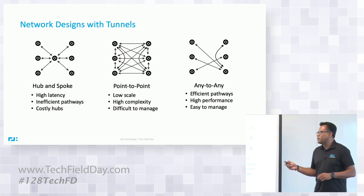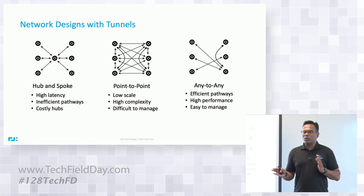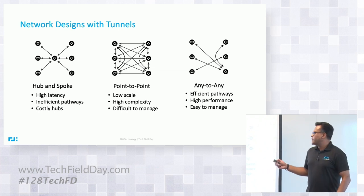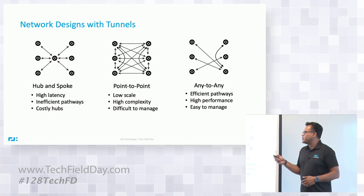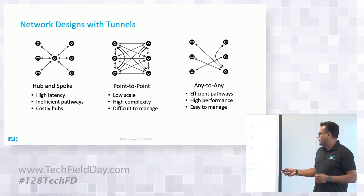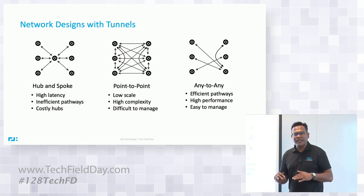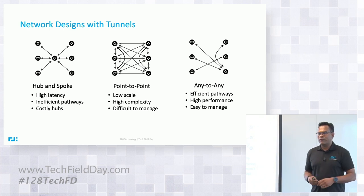In our case, there is no mesh of tunnels. Unless there is a flow, no logical connection is established. If these routers want to send packets, the first packet goes through, a logical connection is established, and then flows go through as needed. It's an any-to-any connection depending on when the connection is required, and that's why it creates the most efficient pathway. It's high performance, and easy to manage — you just configure where the services are located, and flows are directed towards services as and when required.